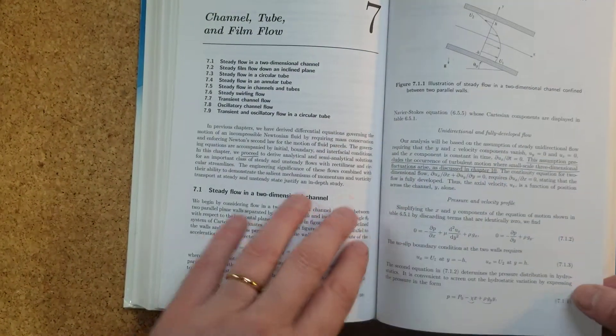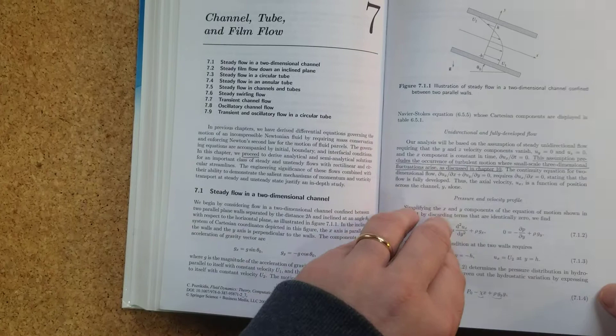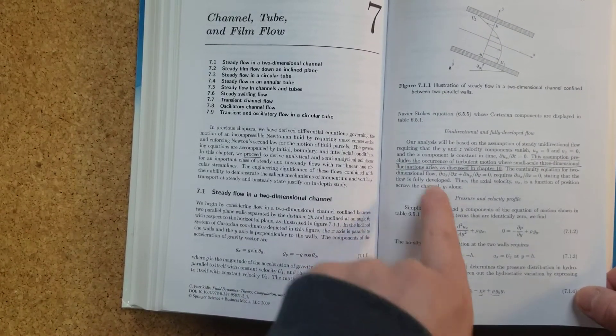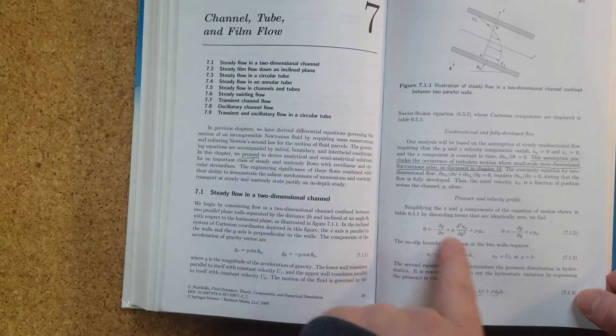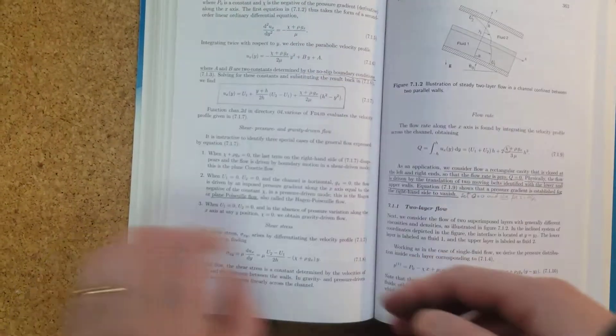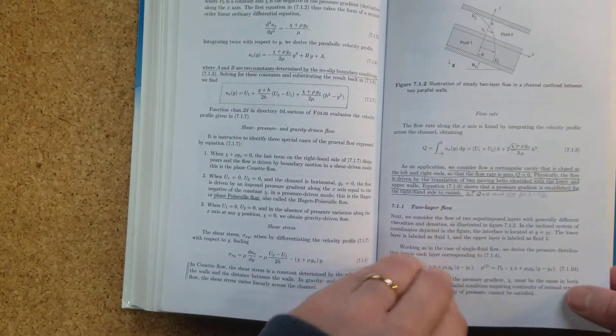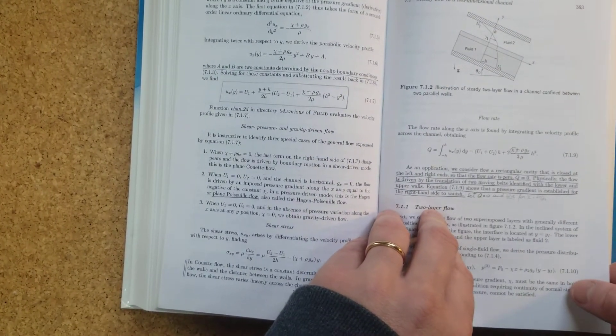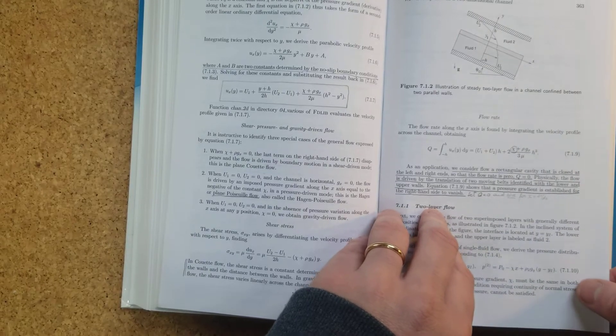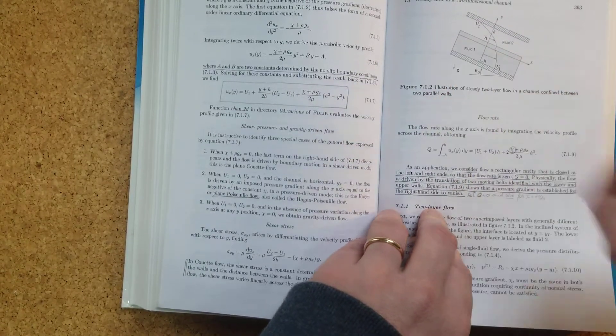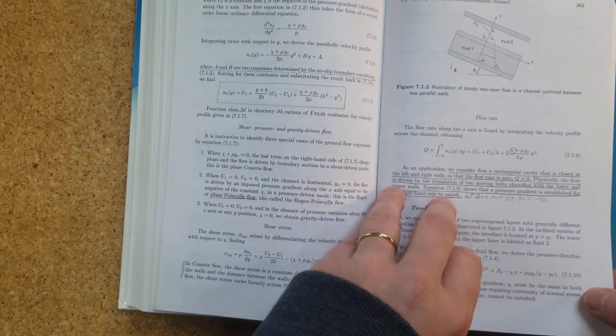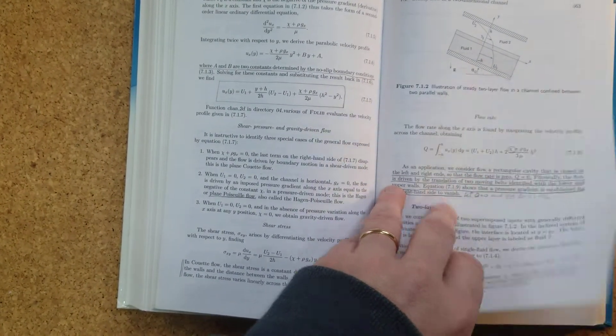And then at the end of each part, so for example here, it always starts from first principles, explains how the Navier-Stokes equation is simplified, it solves them, finds the solution. So for example, this is the case of two fluids in a channel, inclined with respect to an angle.